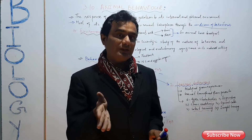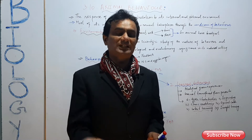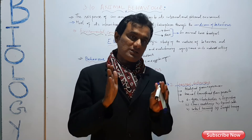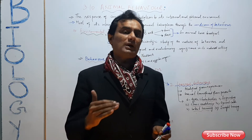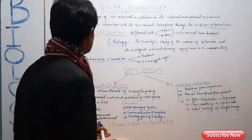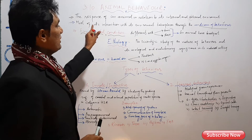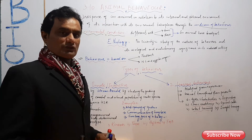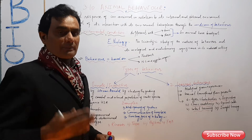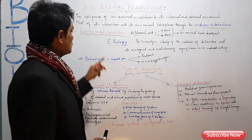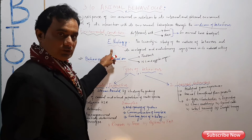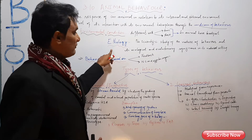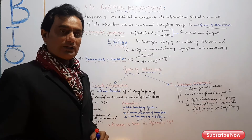Animals adjust themselves, and with that come internal physiological changes, so that the animal can survive in that condition. When we study animal behavior — its nature, its significance, its natural setup — that branch is called ethology: the scientific study of the nature of behavior.